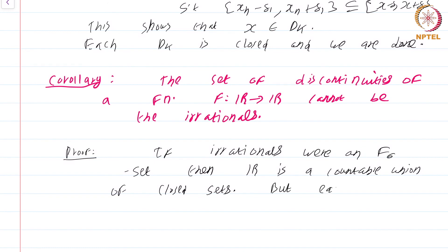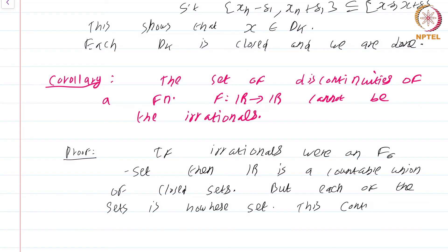But each of these sets is nowhere dense — that is obvious because irrationals do not contain any interval. If you write the irrationals as a union of closed sets, none of those closed sets can contain an interval, and singleton sets certainly do not contain any interval. Therefore these are all nowhere dense sets, which contradicts the Baire category theorem. So we have shown that the set of discontinuities of a function cannot be arbitrary — for instance, you cannot have the irrationals as the set of discontinuities.